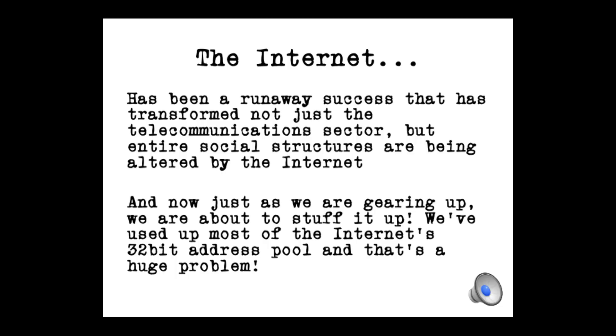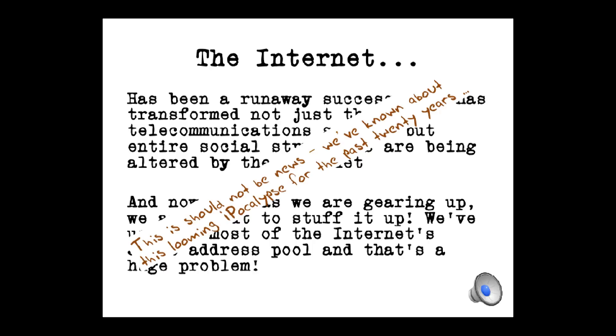And, fascinatingly, just as we now get into this area of ubiquity of the internet, we're about to blow it up. Because one of the most vital components of the internet, the underlying address space, is running out. We've used up most of that 32-bit address pool. And that's a massive problem.